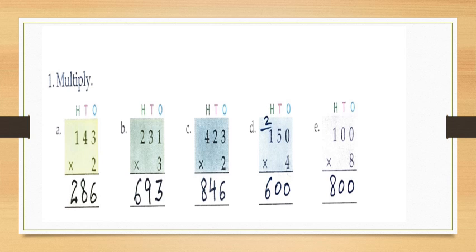Now E part: one hundred multiply by eight. First multiply the ones by eight — that is zero multiply by eight is zero. Write zero under ones. Then multiply the tens by eight — that is zero multiply by eight is zero. Write zero under tens. Then multiply the hundreds by eight — that is one into eight is eight. Write eight under hundreds. So children your answer will be eight hundred.